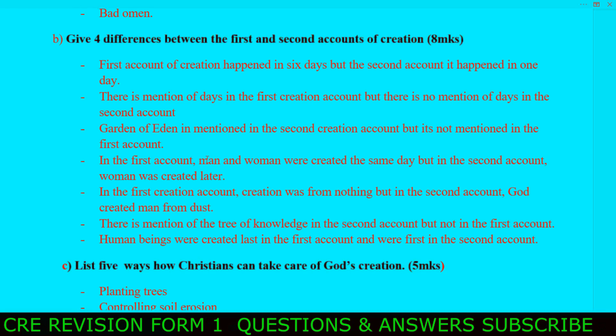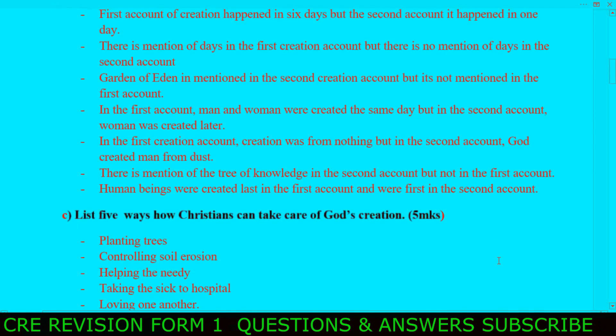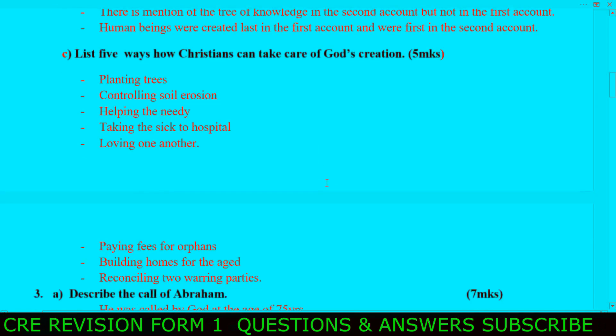Next question: list five ways how Christians can take care of God's creation. Number one, plant trees. Number two, controlling soil erosion. Number three, helping the needy. Next, taking the sick to the hospital. Next, loving one another. Next, praying for orphans. Next, building homes for the aged. Next, reconciling two warring parties.